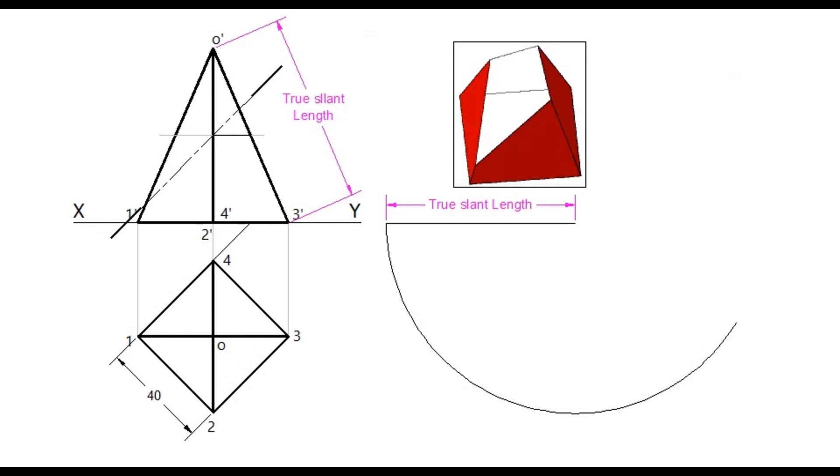Now, with the base length as radius, cut arcs on the development part. Since this is a square pyramid, four segments should be marked on the development part.